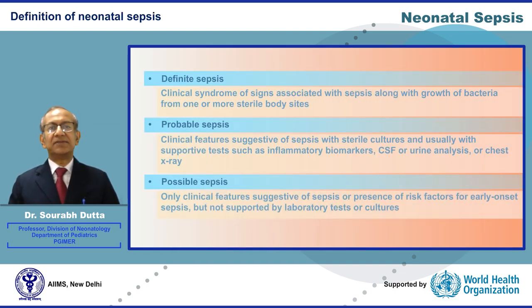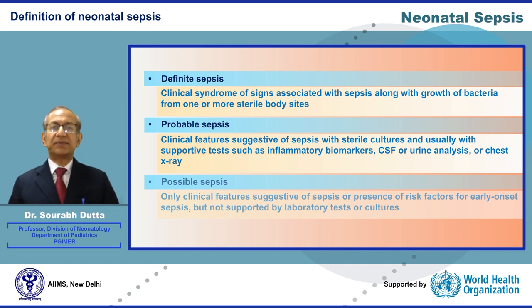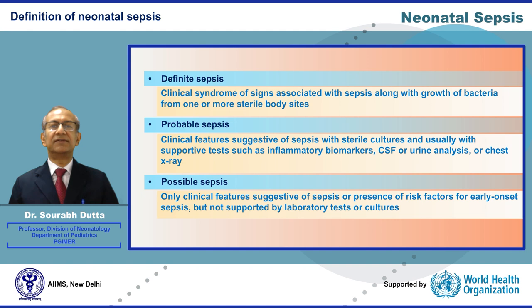How is Neonatal Sepsis defined? Neonatal Sepsis may be definite, probable or possible. Definite Sepsis is defined as a clinical syndrome of a constellation of signs known to be associated with Sepsis along with the growth of bacteria from one or more sterile body sites. Probable Sepsis is defined as a similar clinical syndrome suggestive of Sepsis but with sterile body fluid cultures, often supported by positive inflammatory biomarkers, CSF or urine analysis, or a chest X-ray suggestive of pneumonia. Possible Sepsis is the presence of clinical features or risk factors of early onset Sepsis not supported by laboratory tests or cultures.